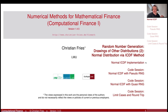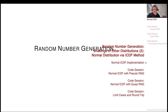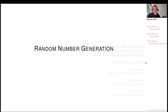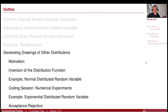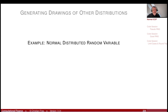Welcome to Numerical Methods. We are still in our section on random number generation, but we now started talking about generating drawings of other distributions. Let's explore the inversion of the distribution function method for generating sequences of drawings of a normally distributed random variable.